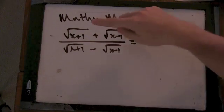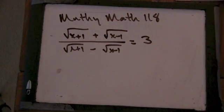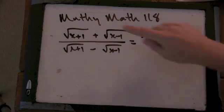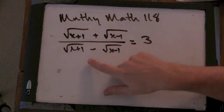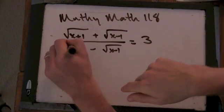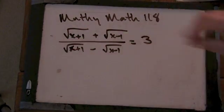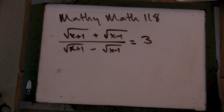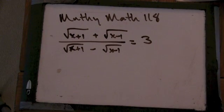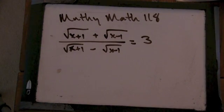The square root of x plus 1 plus the square root of x minus 1 on top, and on the bottom we have the square root of x plus 1 minus the square root of x minus 1, equals 3. So, how do you want to approach solving for x here?